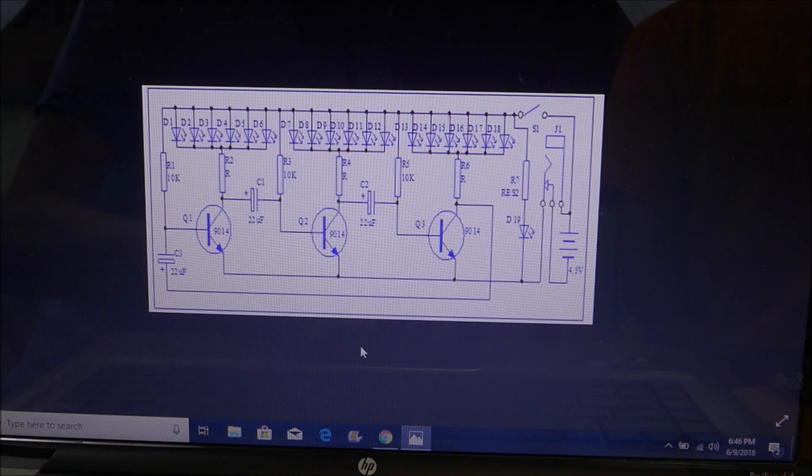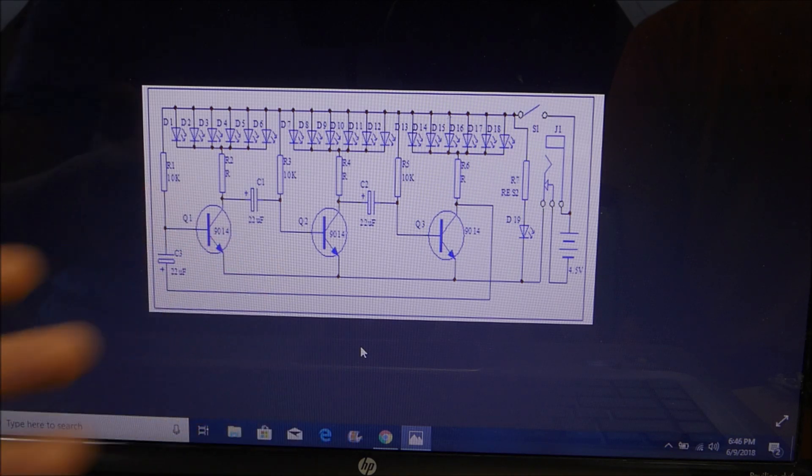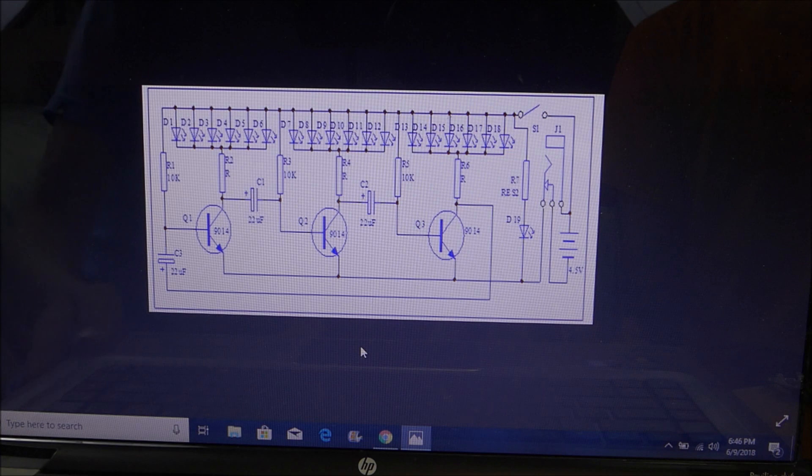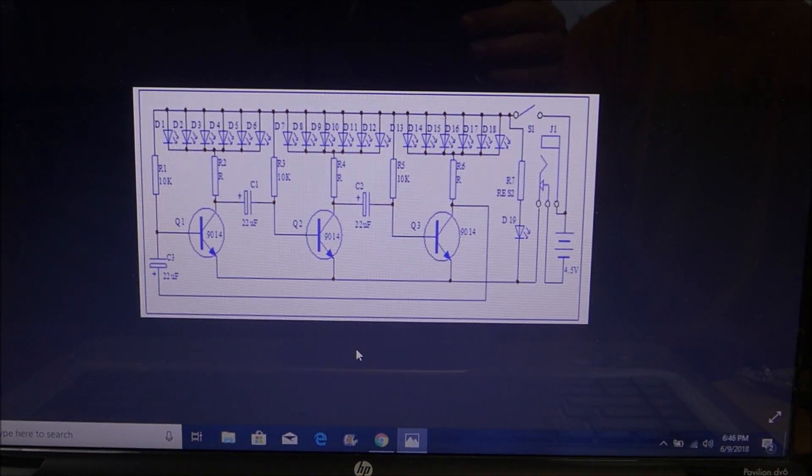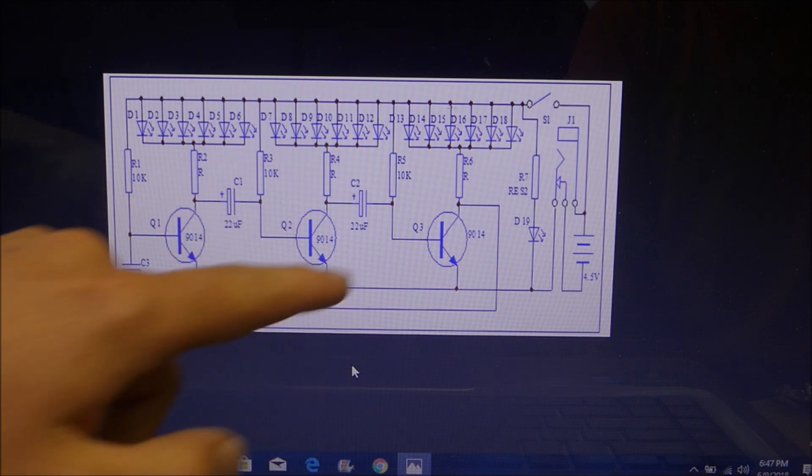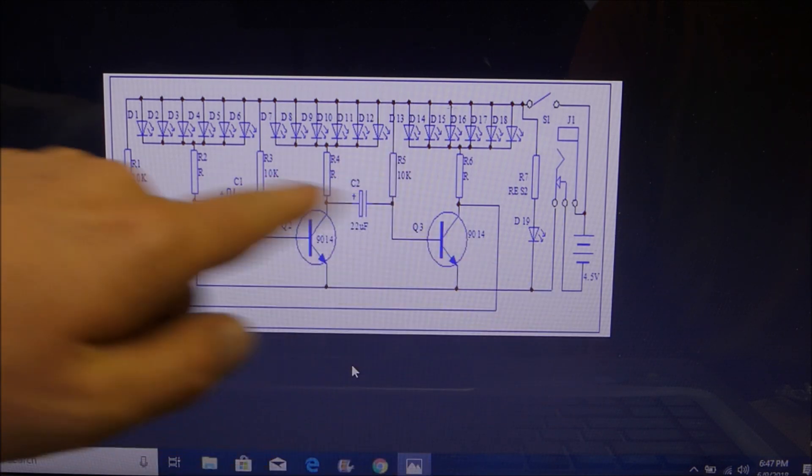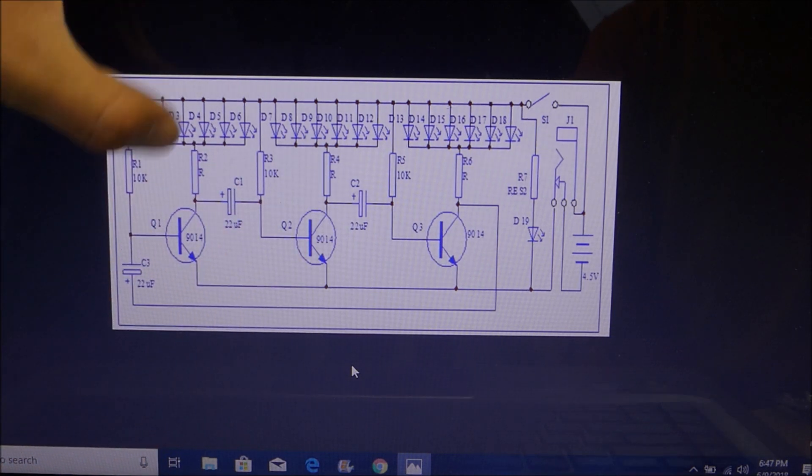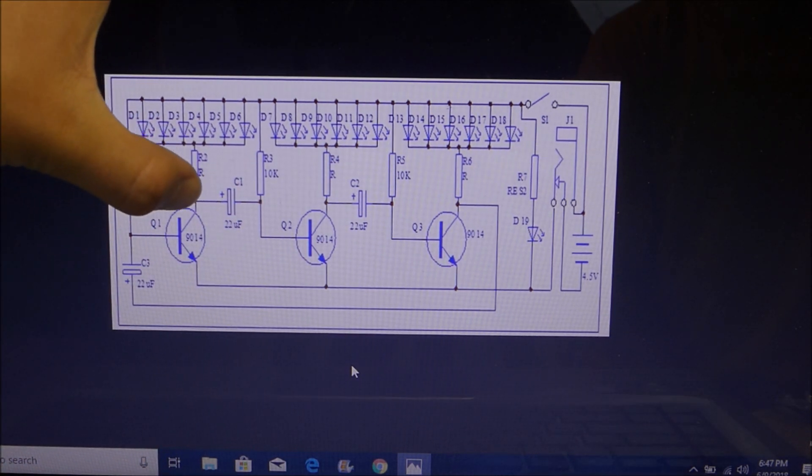I was originally going to make a schematic myself, but I decided it would be easier just to look it up. After a little bit of finding, I found a schematic for this Christmas tree device. As you can see, it's got three transistors, three capacitors, six resistors, and 18 LEDs, and it's arranged in something called a ring oscillator format.